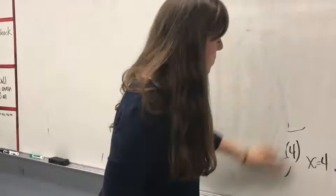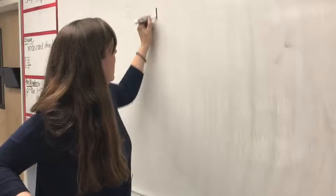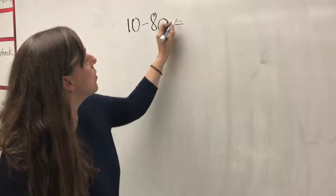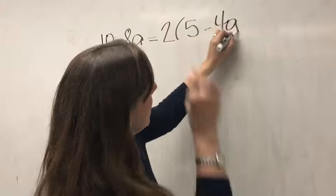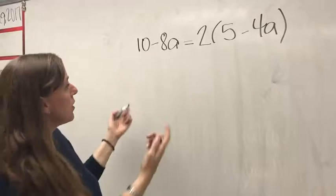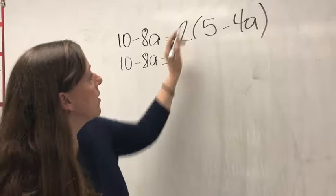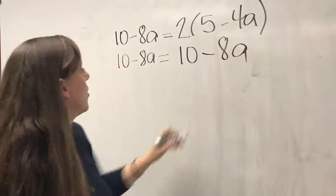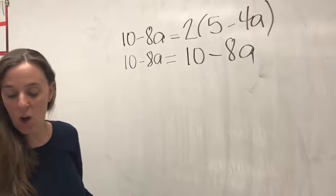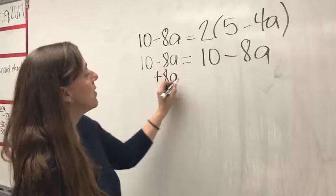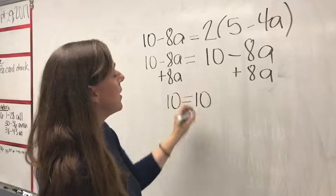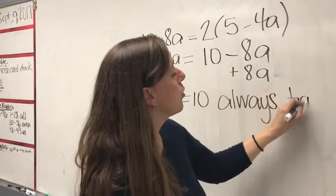Let's solve 10 minus 8a equals 2 times the quantity 5 minus 4a, to see if it's an identity or has no solution. First, apply the distributive property on the right side: 10 minus 8a equals 10 minus 8a. Adding 8a to both sides gives 10 equals 10, which is always true — this is an identity.